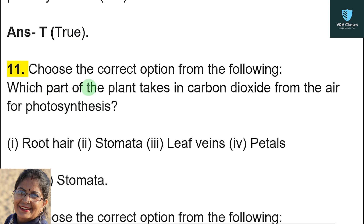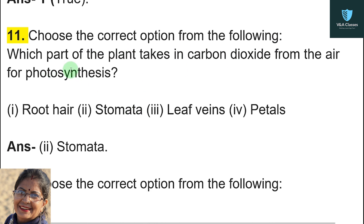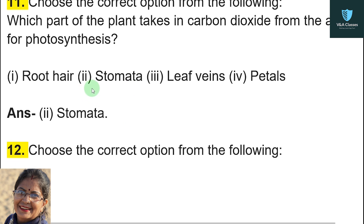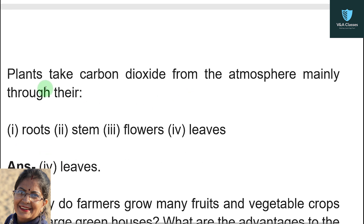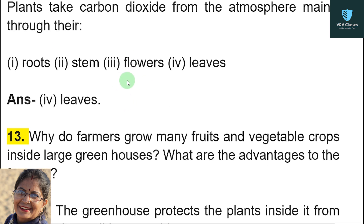Question number eleven — choose the correct option: which part of the plant takes in carbon dioxide from the air for photosynthesis? Answer: stomata — option two. Next: plants take carbon dioxide from the atmosphere mainly through their __. Answer: leaves — option four.